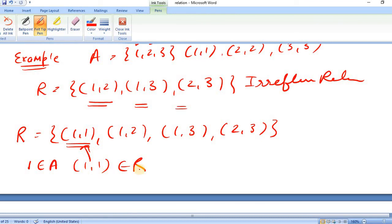The condition says that for every element in A, (A,A) should not be there. But it is here. (1,1) is here. So this cannot be an Irreflexive Relation. This is not an Irreflexive Relation. Only the first one is an Irreflexive Relation.